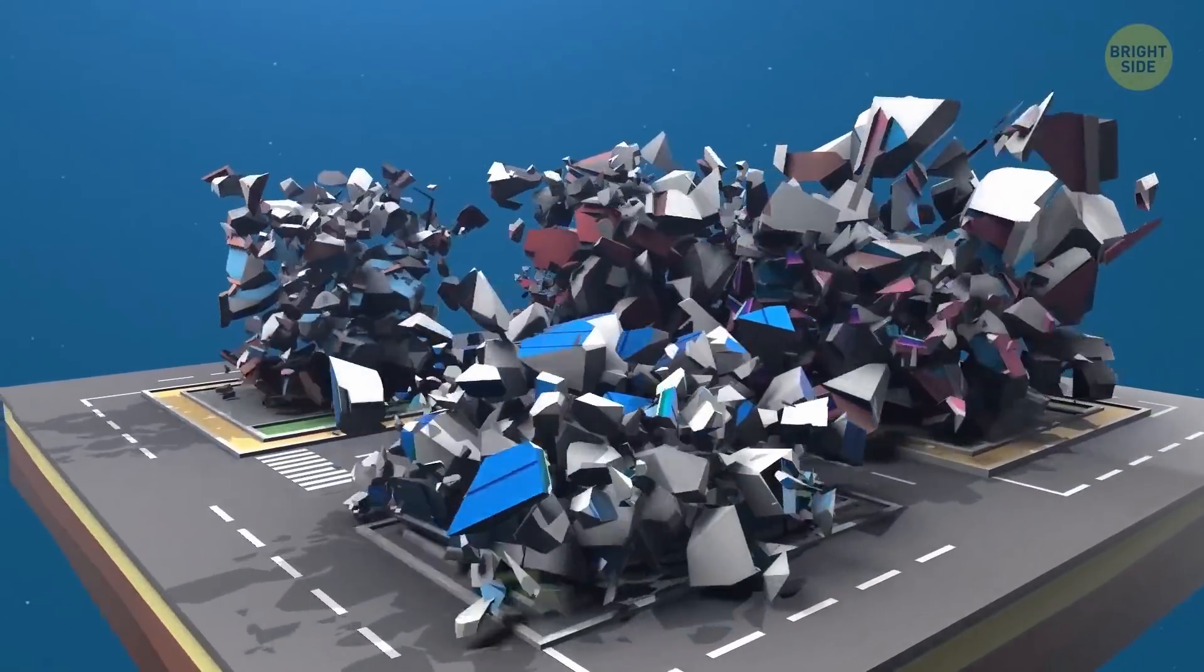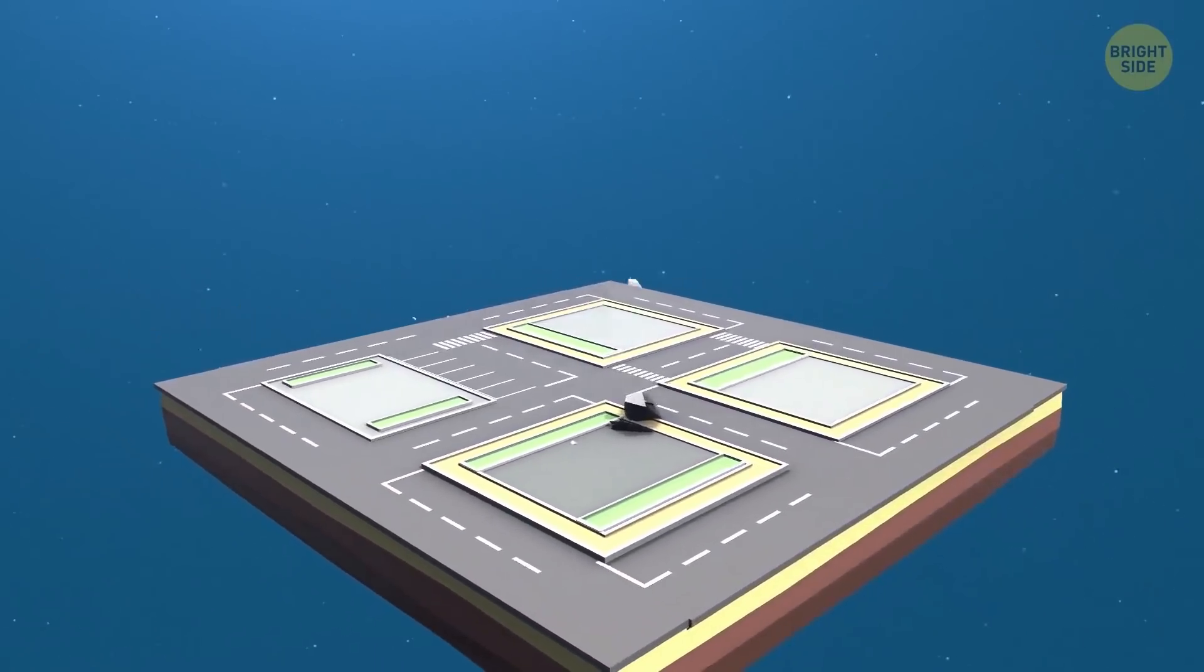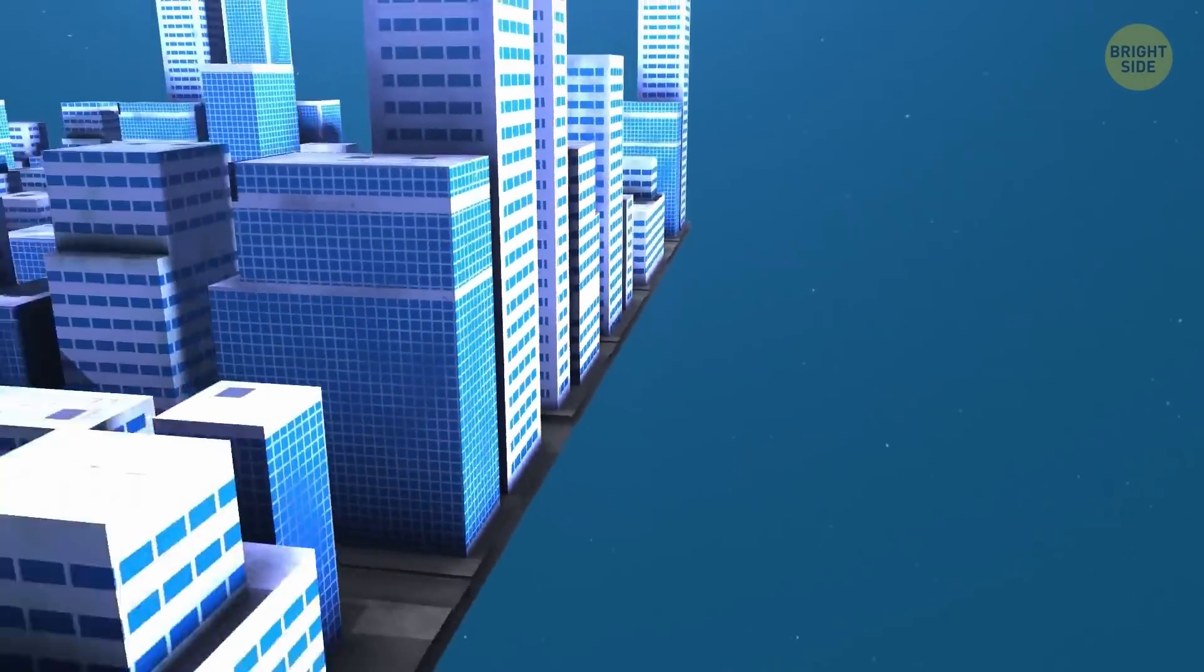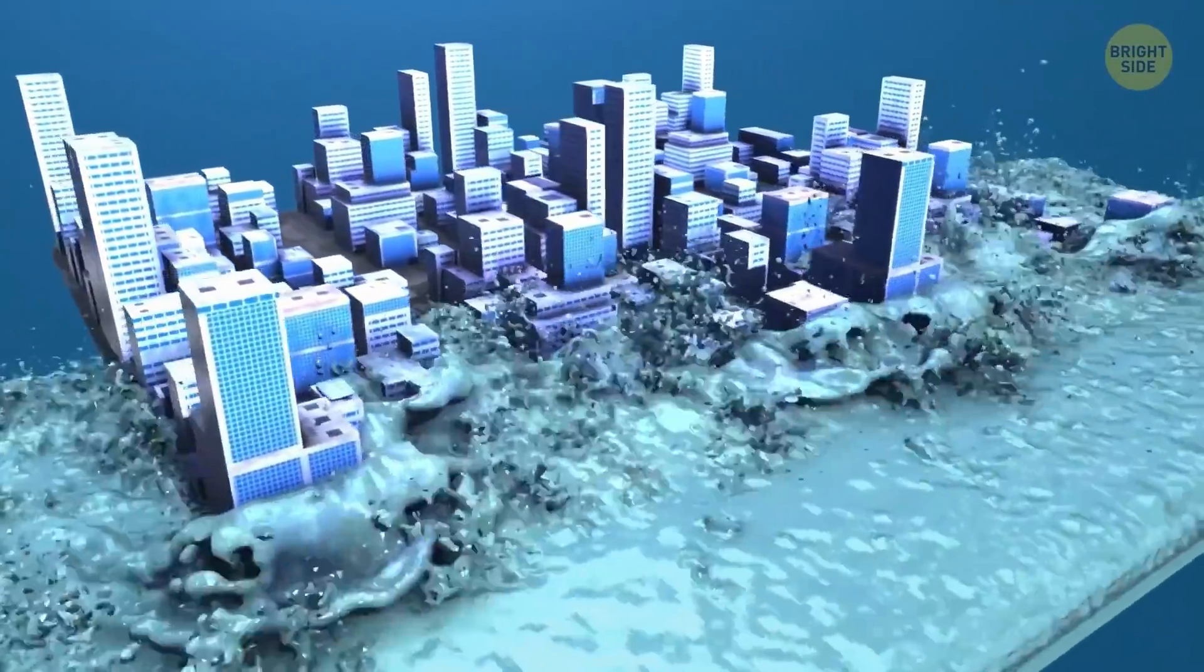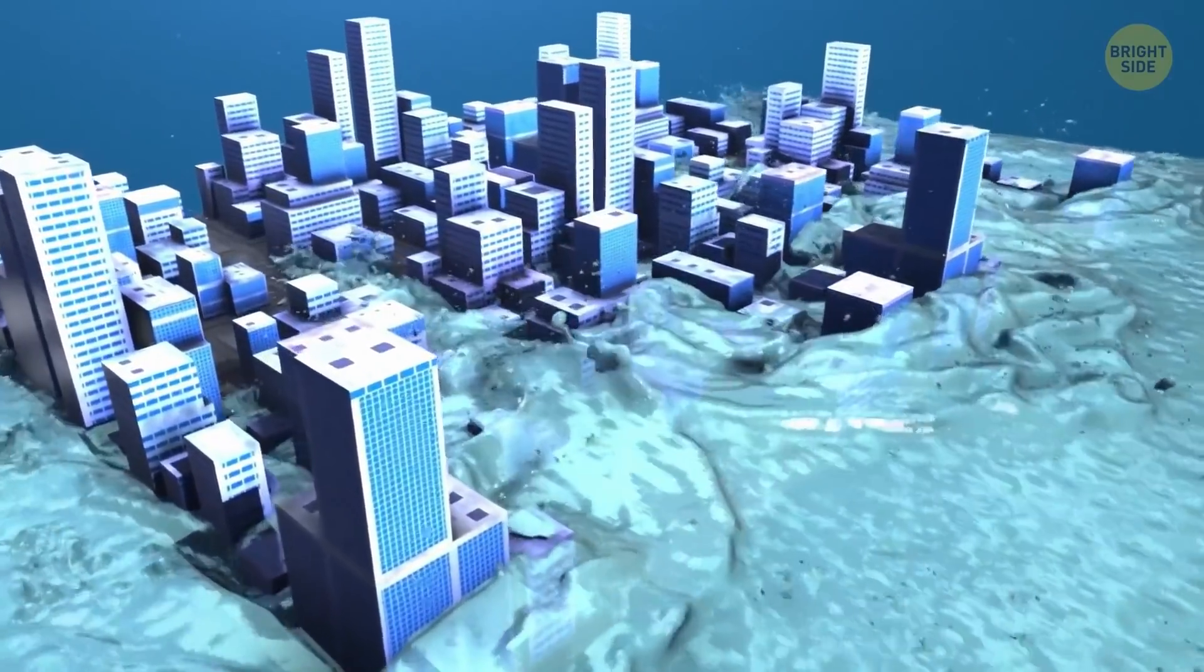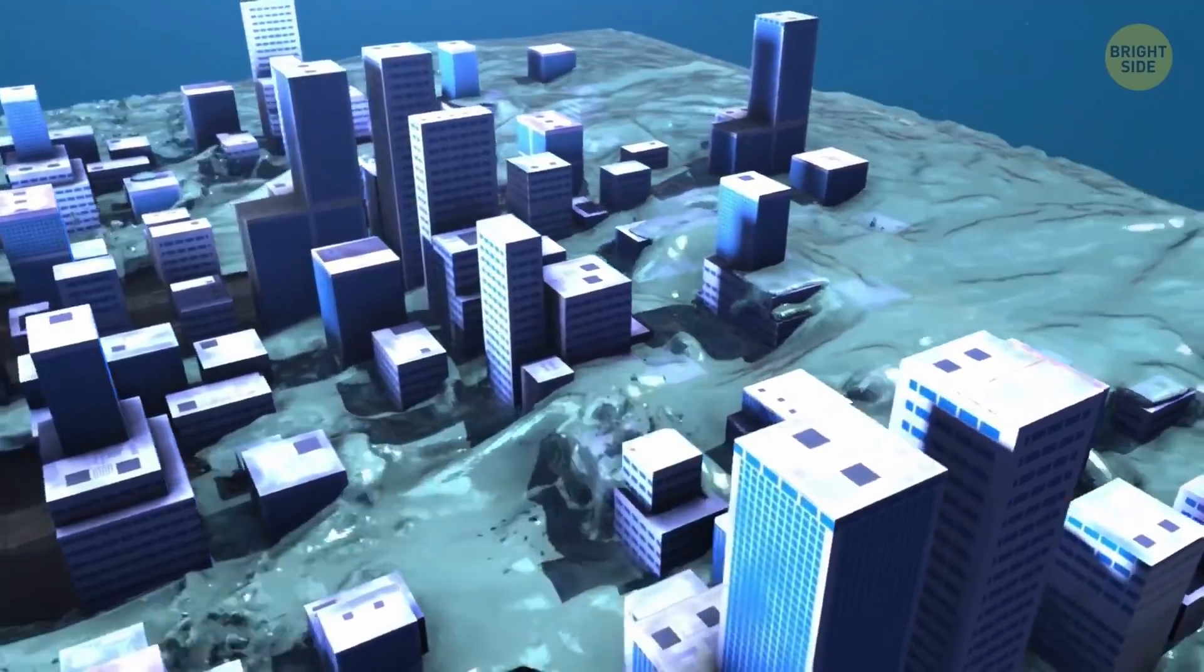Buildings and other man-made structures would collapse, sending tons of debris into the air and creating chaos. The sudden change in direction would move all the water on the planet, which in turn, would create vast tsunamis. They'd move across the planet, destroying everything in their path and literally changing the whole structure of the Earth.